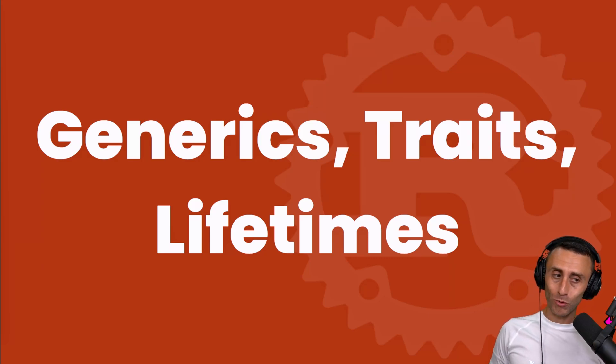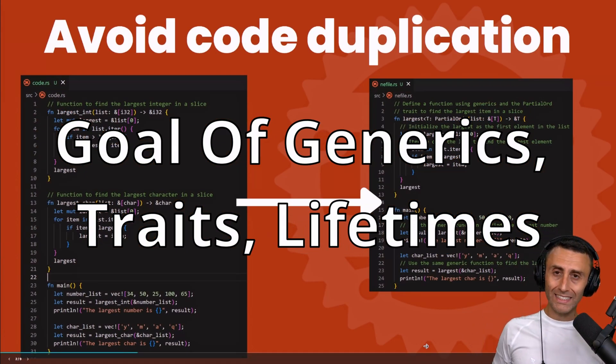Today we'll start talking about generics, traits, and lifetimes in Rust. Maybe some of you already heard these terms, or at least the generic terms. Let's try to clarify what these terms are for the Rust programming language.